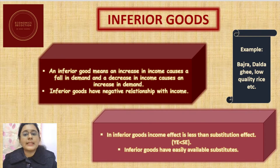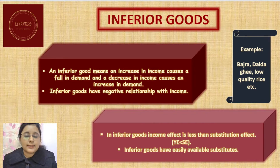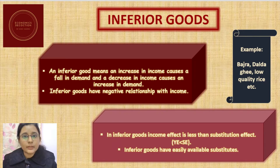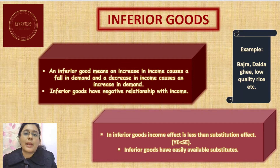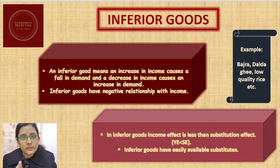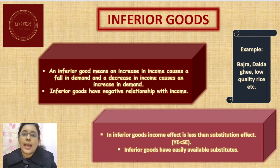Now let us understand inferior goods. Inferior goods means an increase in income causes a fall in demand, and a decrease in income causes an increase in demand. The income effect is negative in the case of inferior goods. Inferior goods have a negative relationship with income: when income is high, demand for inferior goods is low; when income is low, demand is high. The income effect is less than the substitution effect, as inferior goods have easily available substitutes.